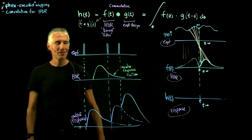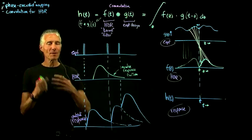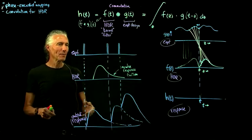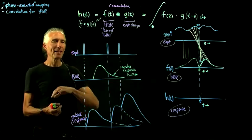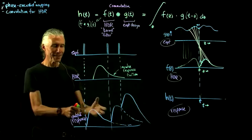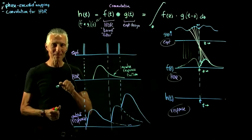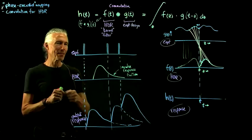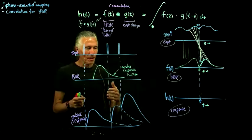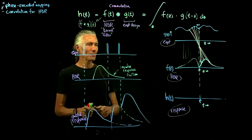Is this a good model of how the brain works? No. For instance, it doesn't allow any habituation — show somebody a face and immediately show them another face, and you don't get quite as good a response. That's nonlinear. But virtually all fMRI analysis is done this way because we understand linear systems, we understand their problems, and even though reality isn't linear, we still use linear models.